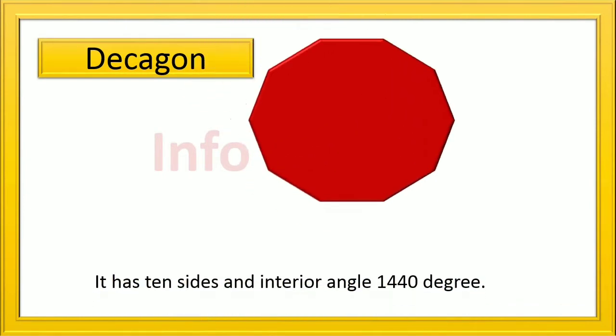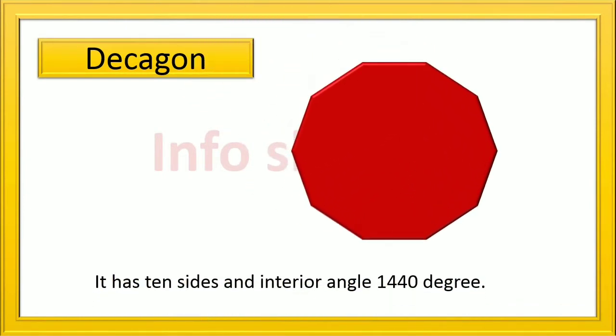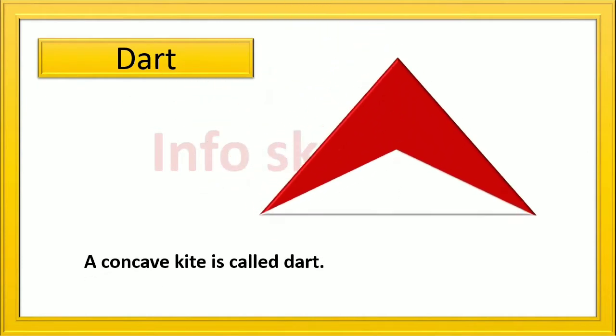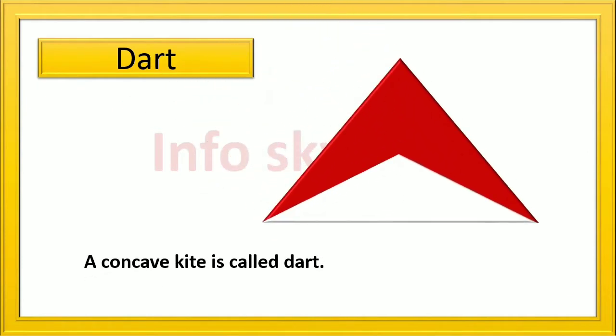Decagon: it has ten sides and interior angle 1440 degree. Dart: a concave kite is called dart.